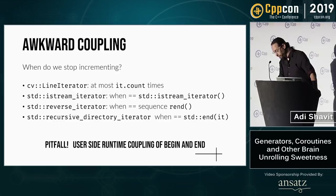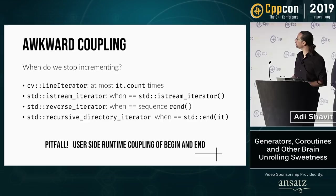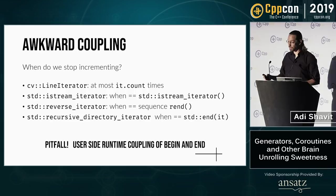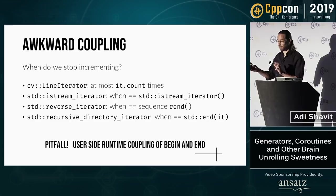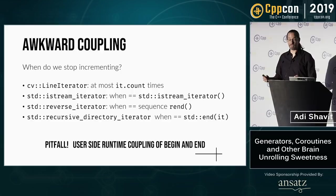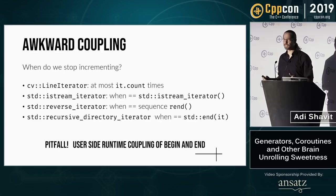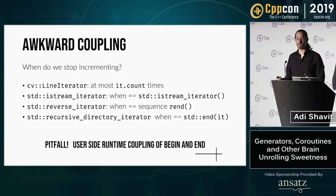How do we know when to stop incrementing the iterator? How do we know when the sequence is done? This is a question all iterator objects must answer. For cv::LineIterator, we must increment it at most it.count times. istream_iterator becomes equal to the default-constructed global istream_iterator. reverse_iterator becomes equal to the rend iterator from the underlying sequence, and recursive_directory_iterator becomes equal to calling std::end on the iterator. Each of these APIs chose a slightly different condition and way for letting the user know when to stop.